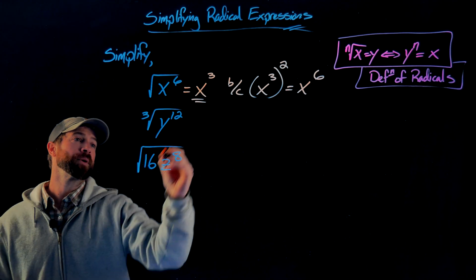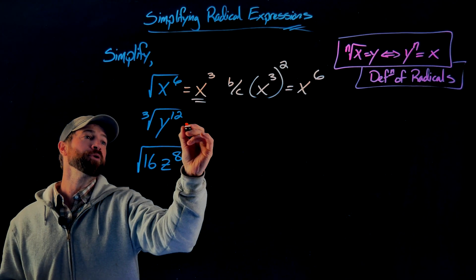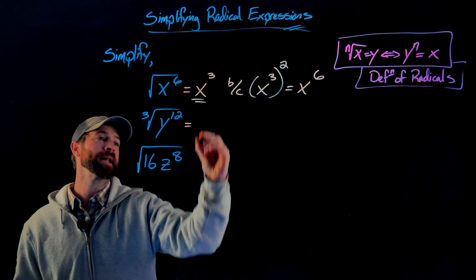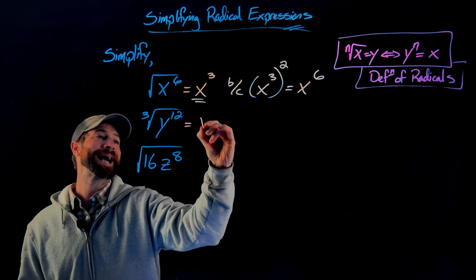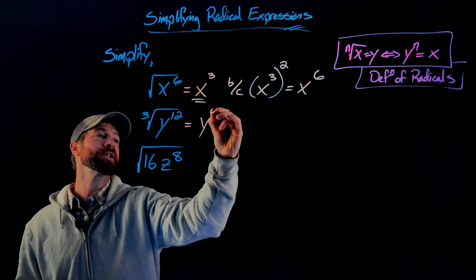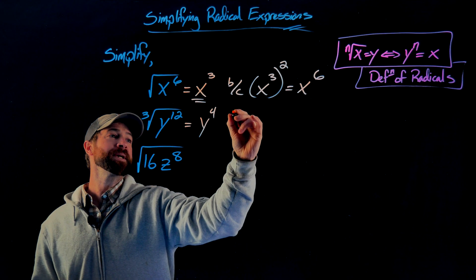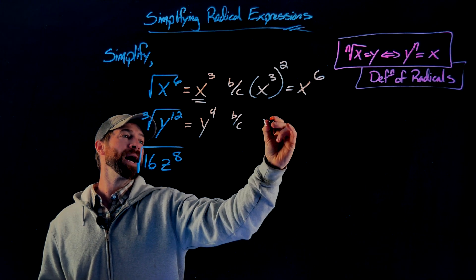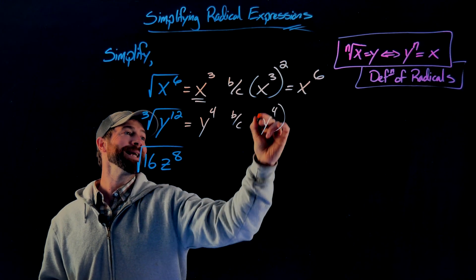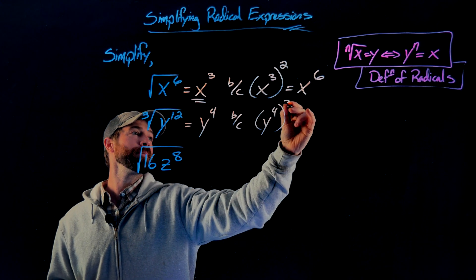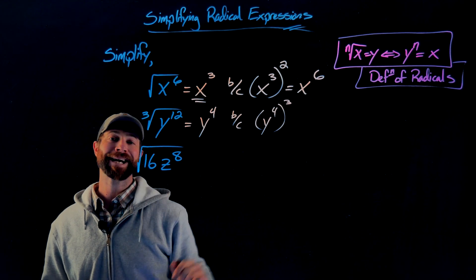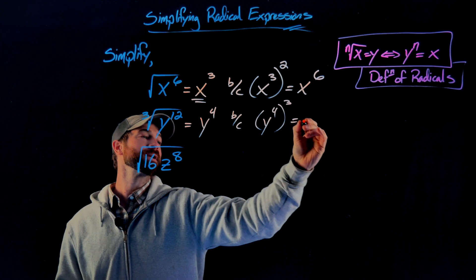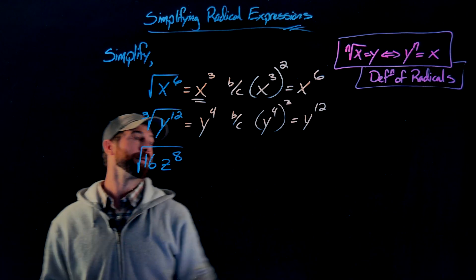The cube root of y to the 12th is y to the fourth, because if we take y to the fourth and raise it to the third power, multiplying the exponents together, we get y to the 12th.